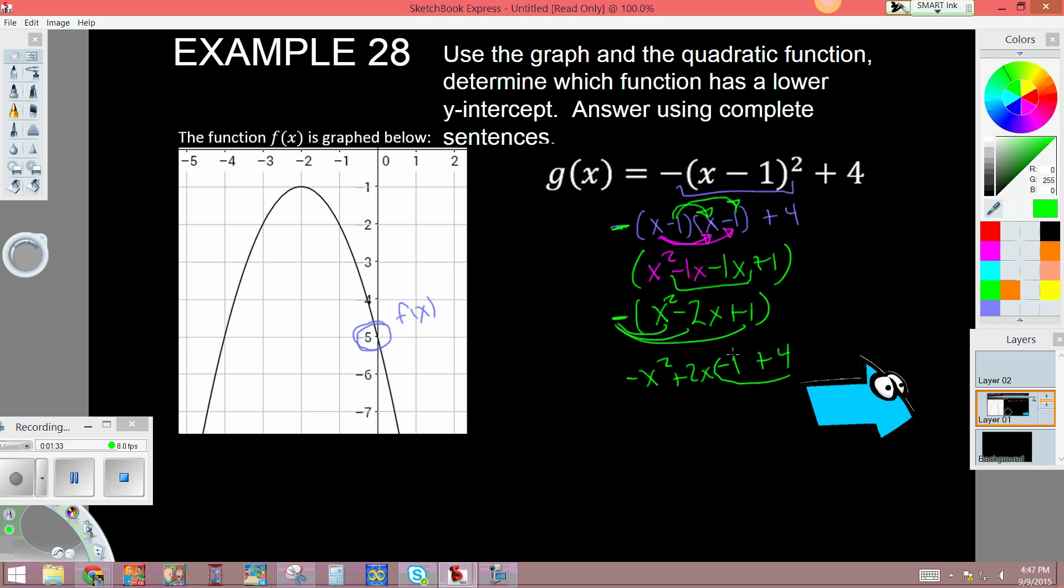Then add the 4. We combine these two and I get plus 3, so negative x squared plus 2x plus 3. We see that our y-intercept for g(x) is 3, but f(x) is negative 5, which is lower than 3. So f(x) has the lower y-intercept.